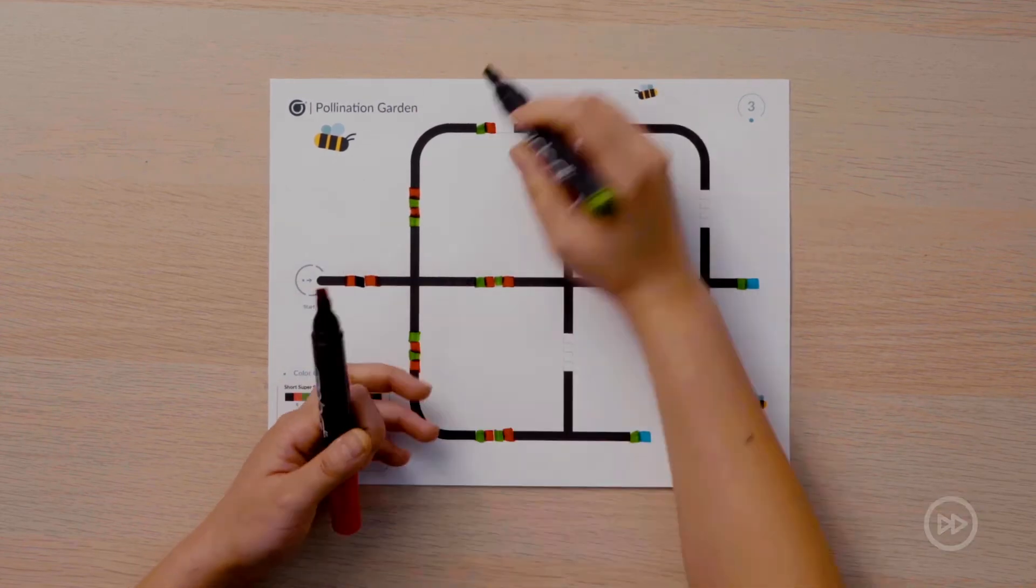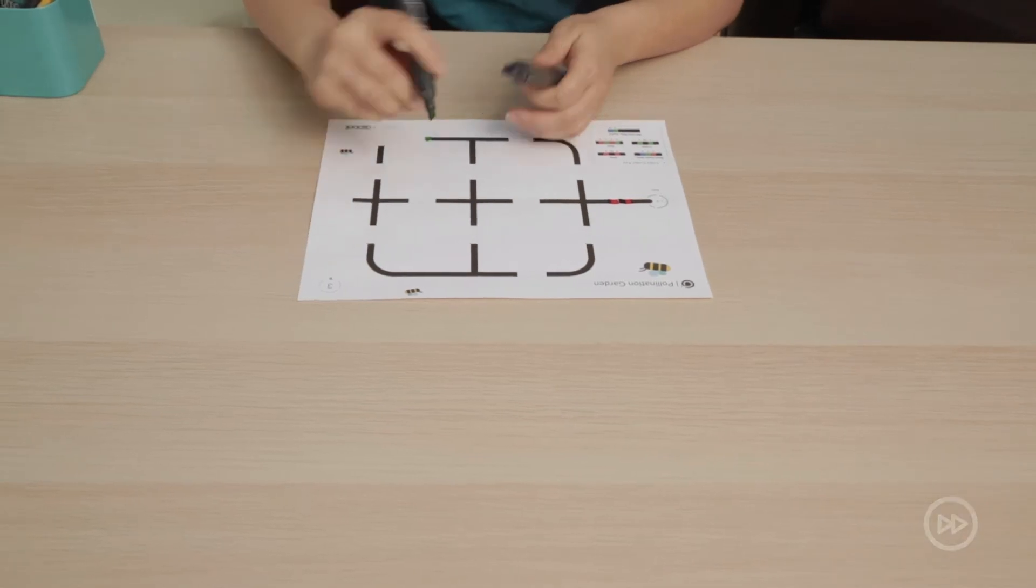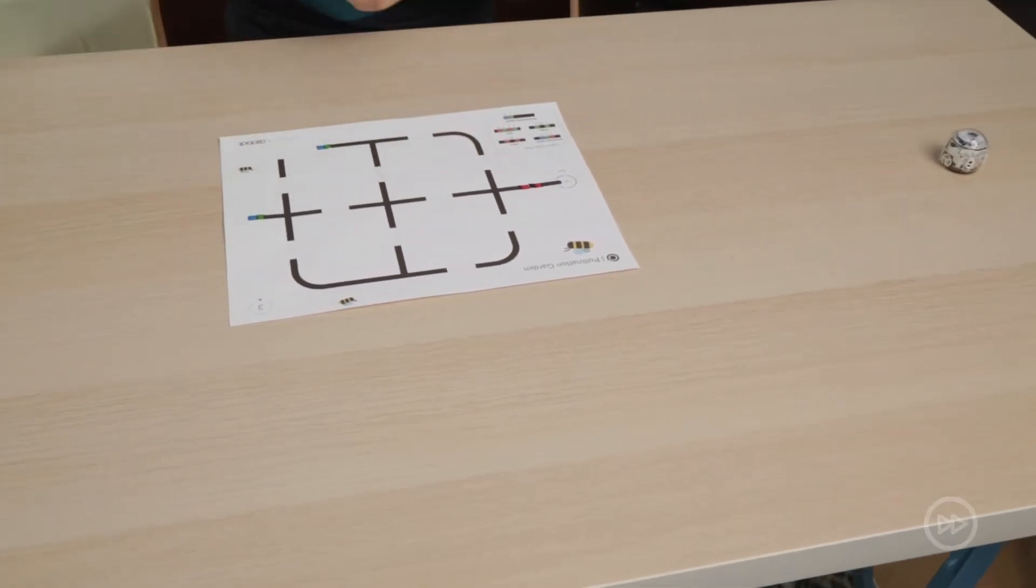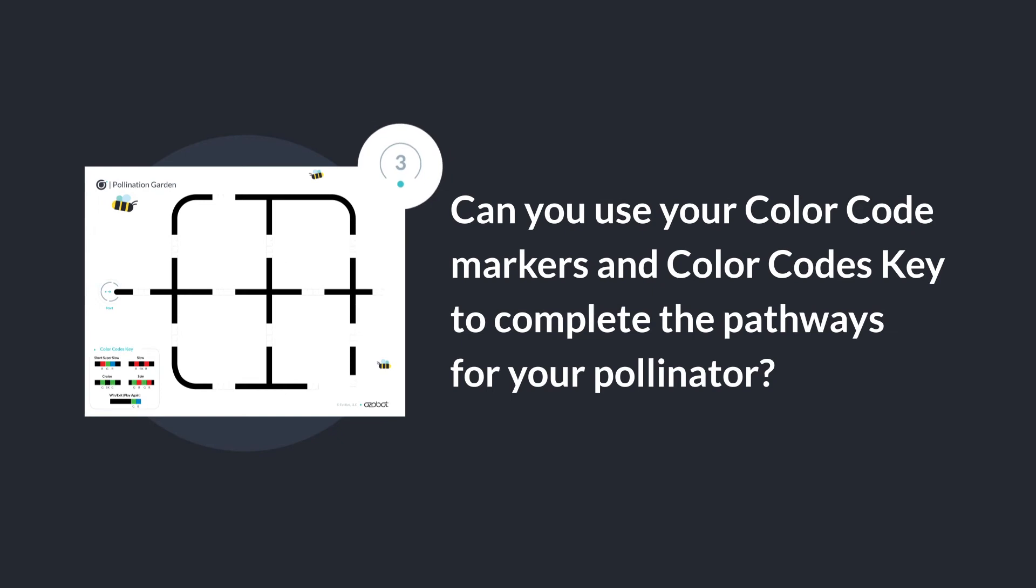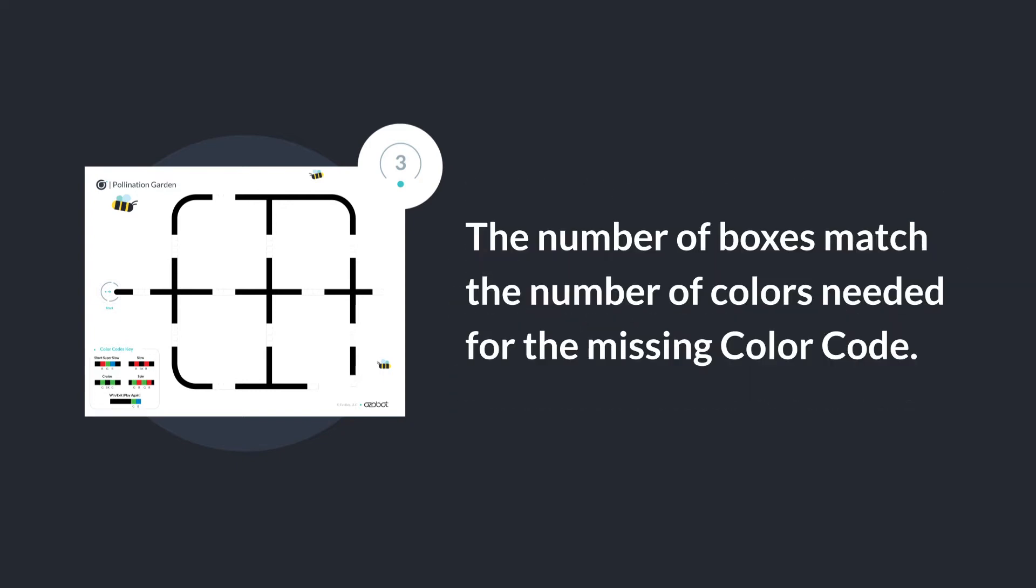The other missing color codes will be spin or win play again. I will use my color code markers to complete each sequence of empty boxes. Can you use your color code markers and color code key to complete the pathways for your pollinator? The number of boxes match the number of colors needed for the missing color code.